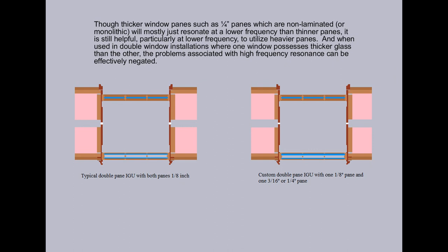Though thicker window panes, such as quarter-inch panes, which are non-laminated or monolithic, will mostly just resonate at lower frequency than thinner panes, it is still helpful, particularly at lower frequency, to utilize heavier panes.